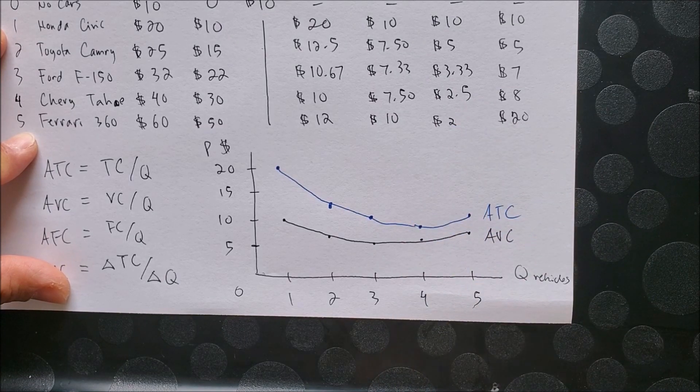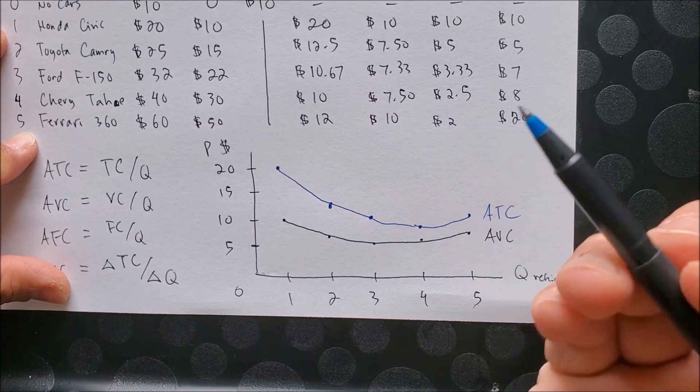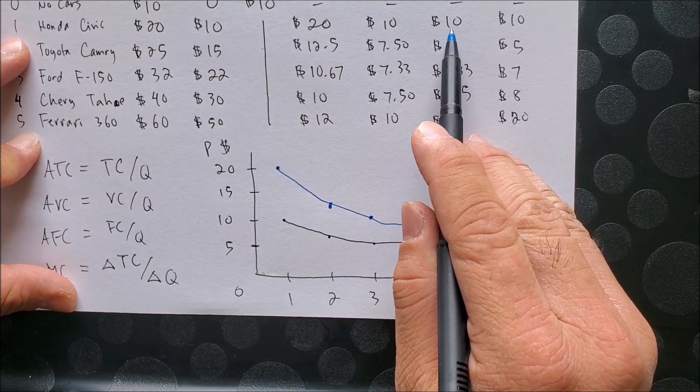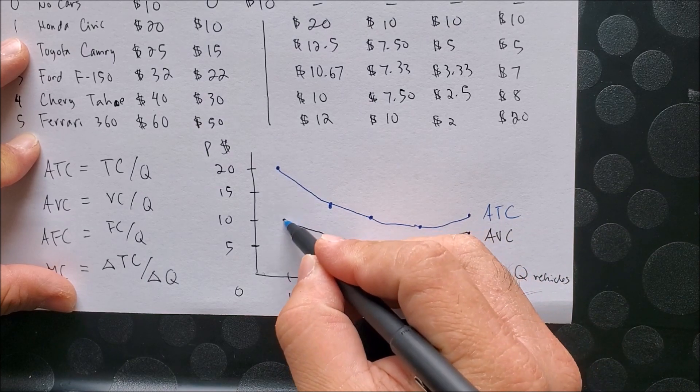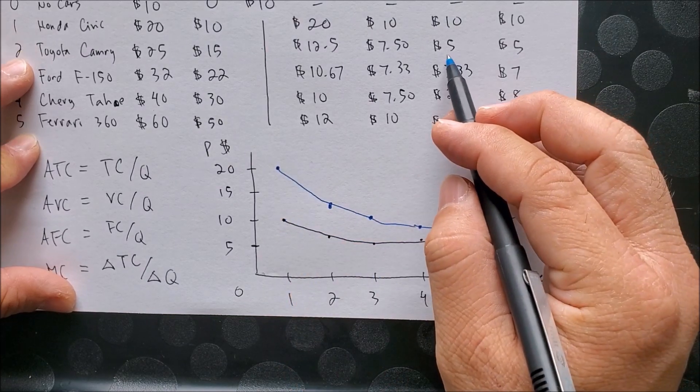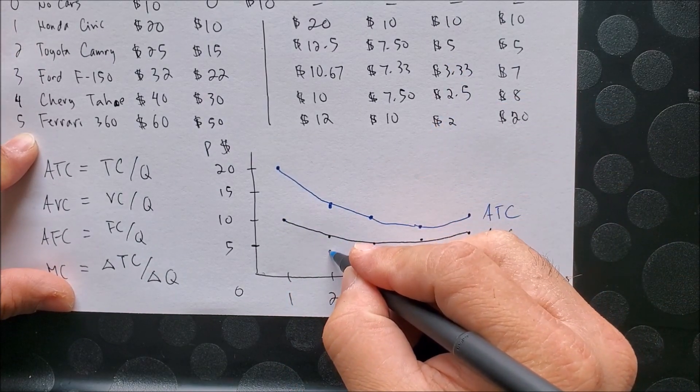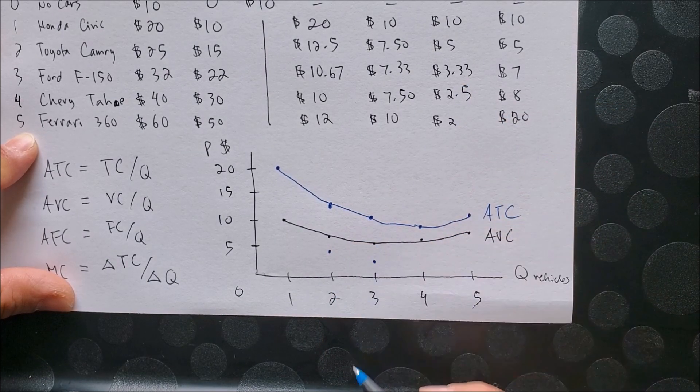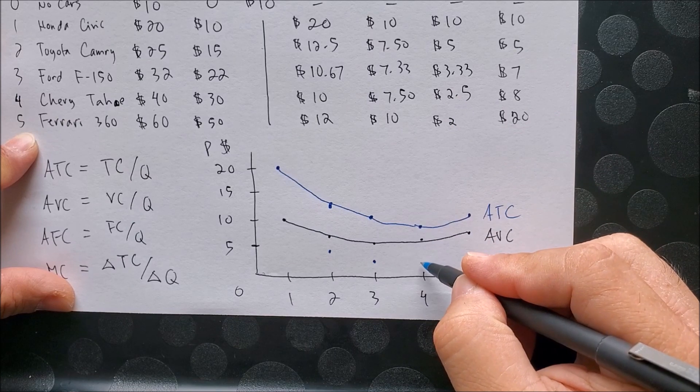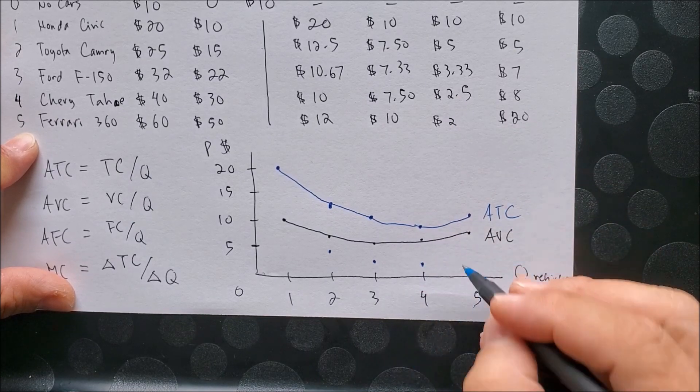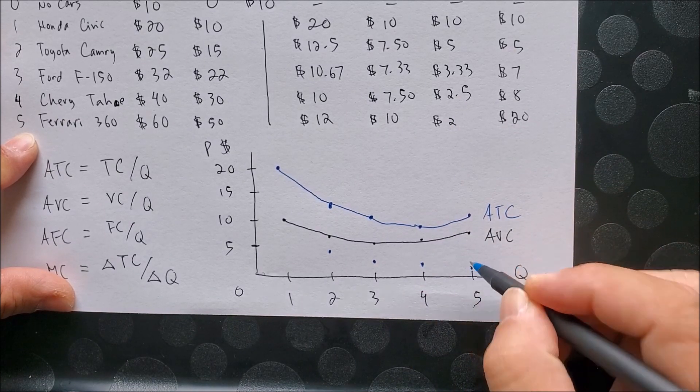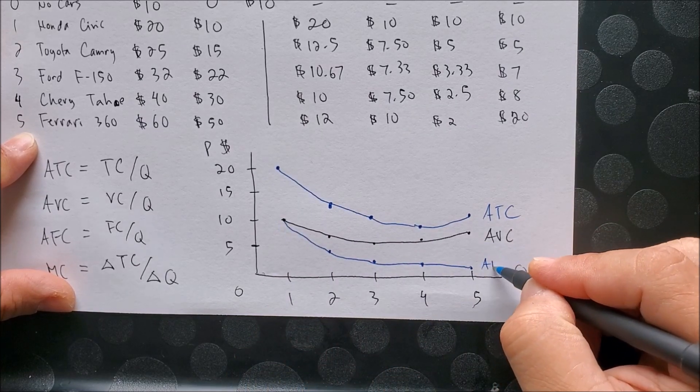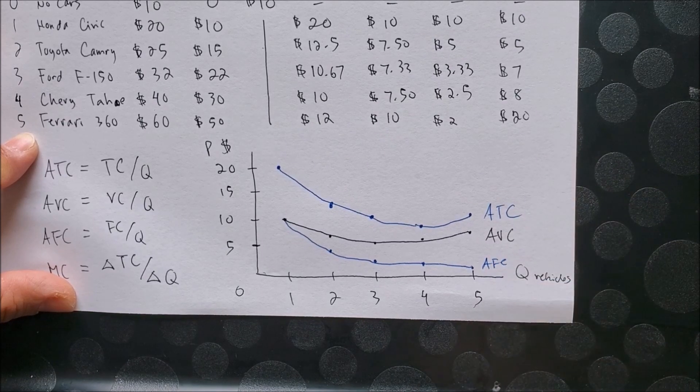So let me use my blue pen again to graph AFC. Here we have one vehicle in $10. There we go. Two vehicles in $5. Three vehicles in $3.33, four vehicles in $2.50, five vehicles in $2. And here we can graph our AFC as such.